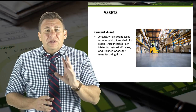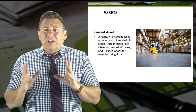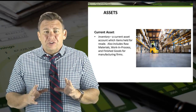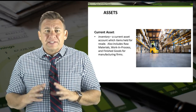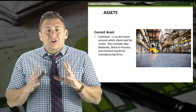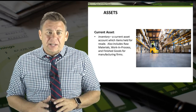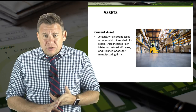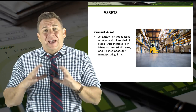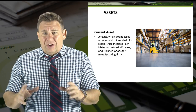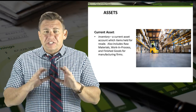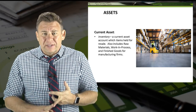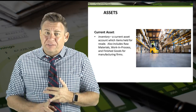We will introduce the accounting for inventory in this course. For merchandise firms, inventory is a current asset which includes items held for resale. Manufacturing firms, which we will learn about in the managerial accounting portion of this course, have several inventory accounts including raw materials, work in process, and finished goods.